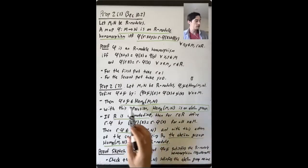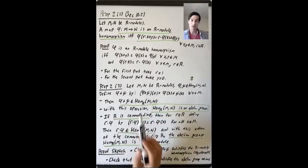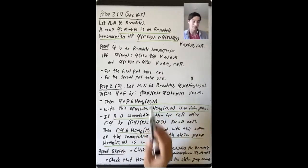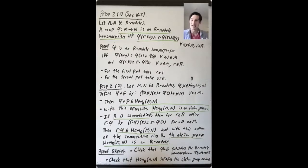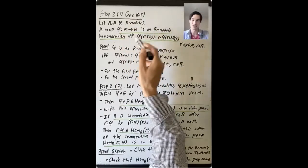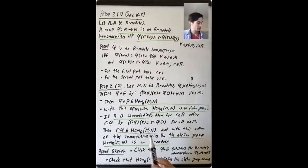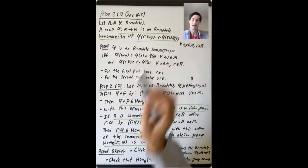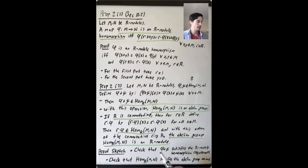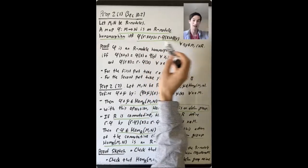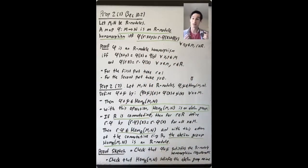What do you need to do for the first part of this proposition? You have to show that phi plus psi really is an R-module homomorphism. This is a nice opportunity to use the criterion we proved above: check what happens when you apply phi plus psi to r·x + y. You can verify that phi plus psi satisfies the things needed to be an R-module homomorphism. It's a good exercise to write down those details.